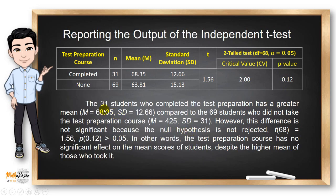From the table, we can see that the 31 students who completed the test preparation course have a greater mean compared to the 69 students who did not take the test preparation course. However, this difference is not significant because the null hypothesis was not rejected. So in other words, the test preparation course has no significant effect on the mean scores of students despite the higher mean of those who took it.